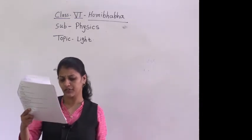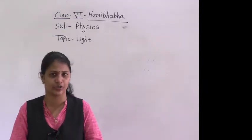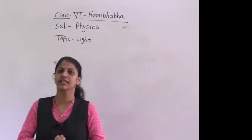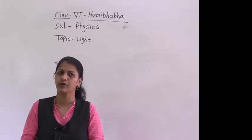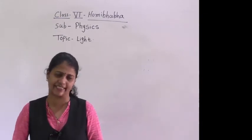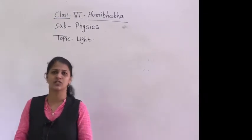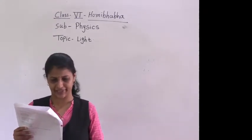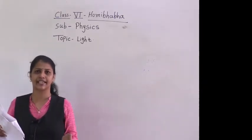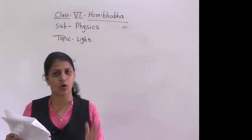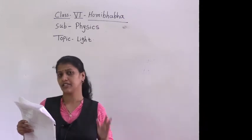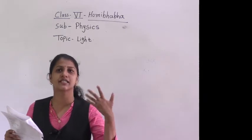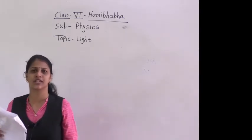Which one of the following does not have mass and volume? Of course, light — light does not have mass or volume. Which one of the following gives out light? The moon is an opaque object, a mirror is also an opaque object, but a burning fire emits light. So the correct option is C.